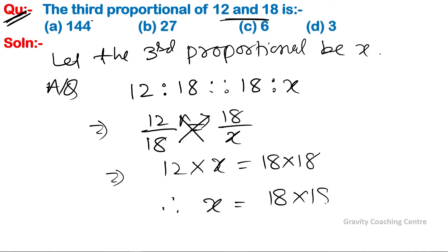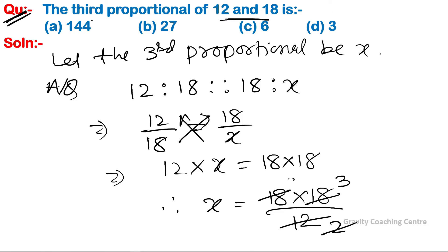Cancelling by 6 gives 3 and 2, then cancelling by 2 gives 9. So 9 times 3 is 27, which is the required answer. Option B is the correct answer.